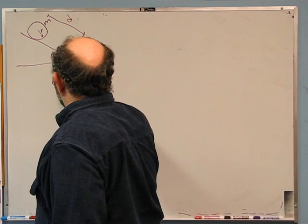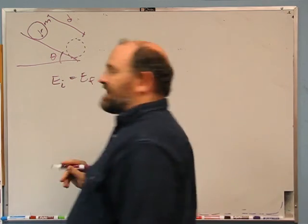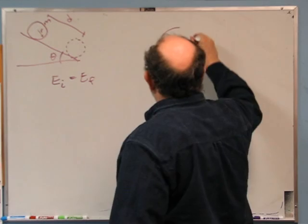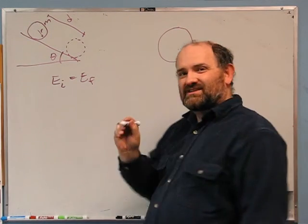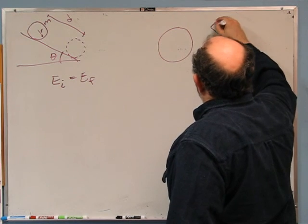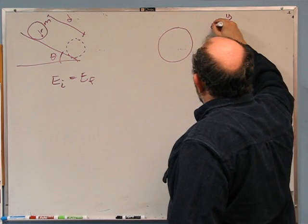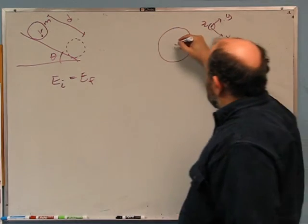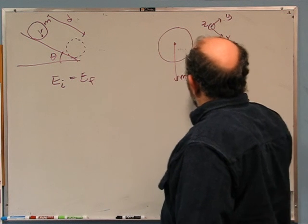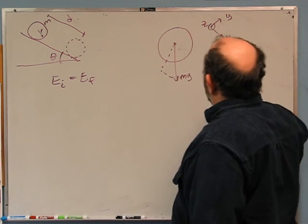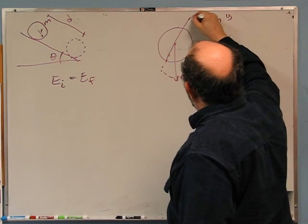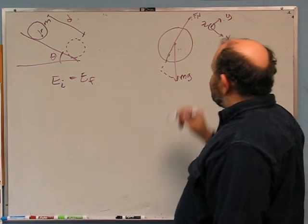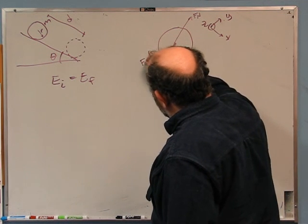So E_i equals E_f. We have to think: are there any external forces that do work? I'll define x and y — by the right hand rule, z is out of the board. The forces we have are gravity straight down, the normal force pushing up, and in this case we're going to have a static friction force to roll without slipping.